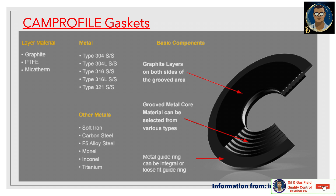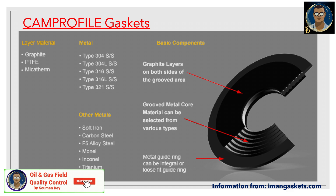The material can be selected from the various types we just discussed. There is also a metal guide ring that can be either integral or a loose-fit guide ring. This retains the shape of the gasket when installing it and when pressure is applied. Here are the different types of cam profile gaskets available in the market.